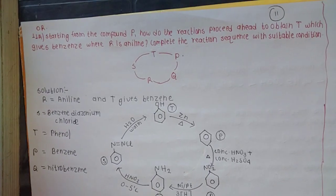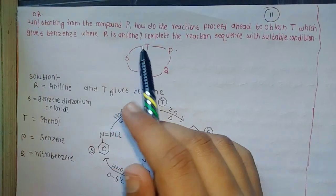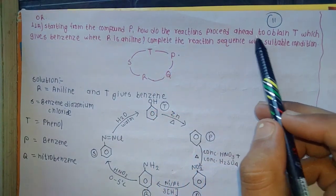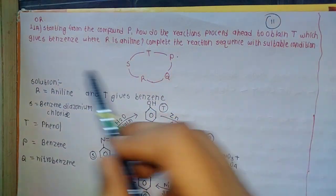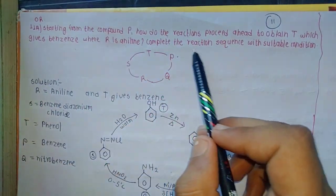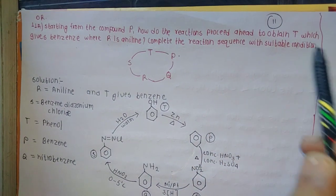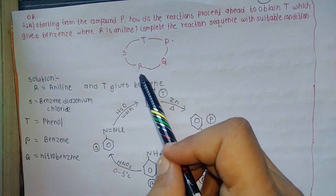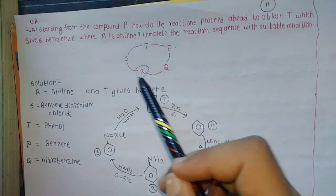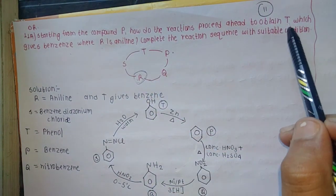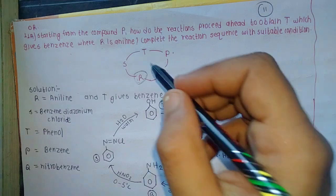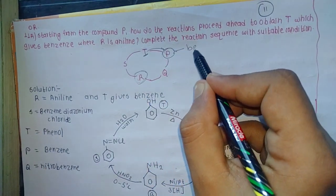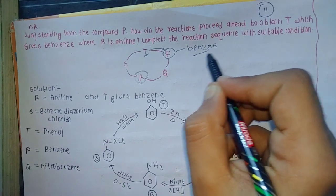Starting from compound P, how do the reactions proceed to obtain T, which gives benzene, where R is aniline? We must complete the reaction sequence with suitable conditions. In this question, we need to get information from R to aniline and how compound T gives benzene. P is benzene.